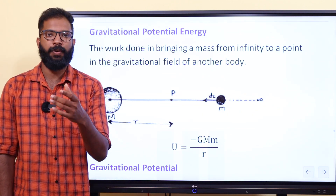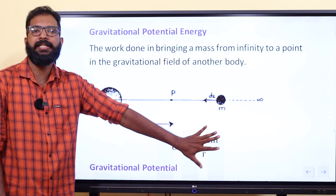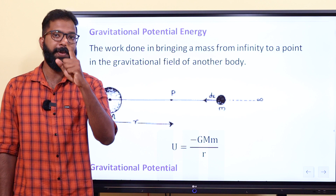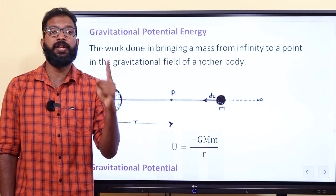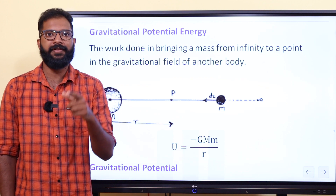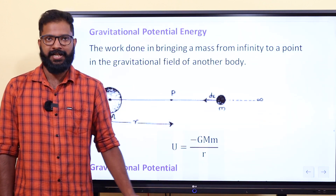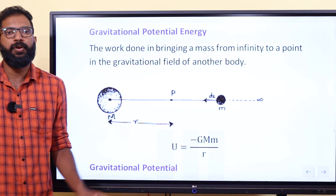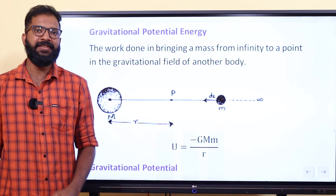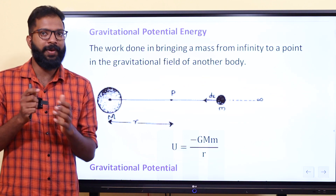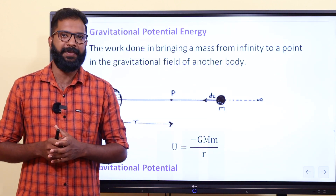It's the gravitational potential energy. The equation is U = −GM/r. It's not a denominator squared — it's just r. The gravitational force equation is F = GM₁M₂/r². So U is equal to −GM divided by r.